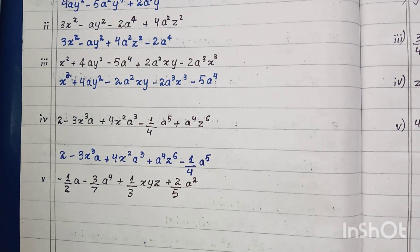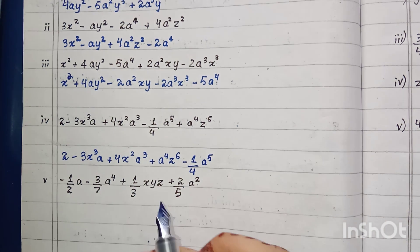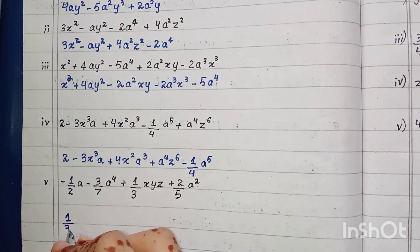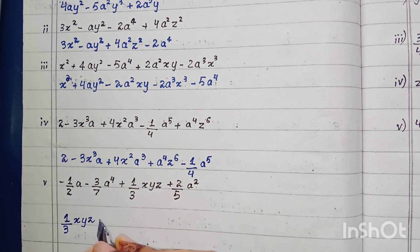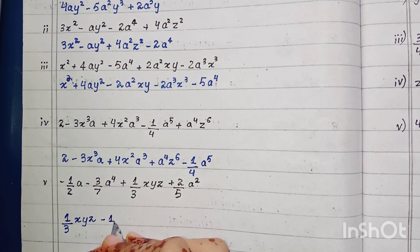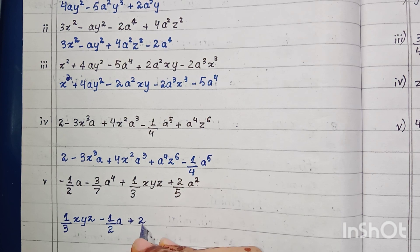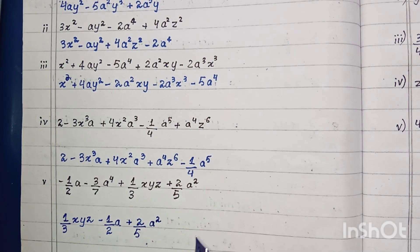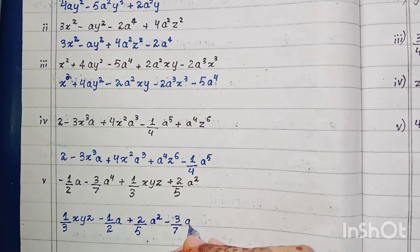In part five, the smallest power of a is zero. We write (1/3)xyz first, then minus (1/2)a, then plus (2/5)a², and then minus (3/7)a⁴.